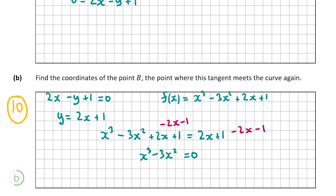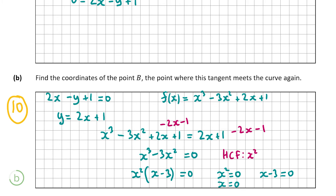The highest common factor is x², so factorizing gives x²(x - 3) = 0. Therefore x² = 0 or x - 3 = 0. x² = 0 means x = 0, which is the x-coordinate of point A — we already knew that. So x - 3 = 0 means x = 3, and this must be the x-coordinate of point B.